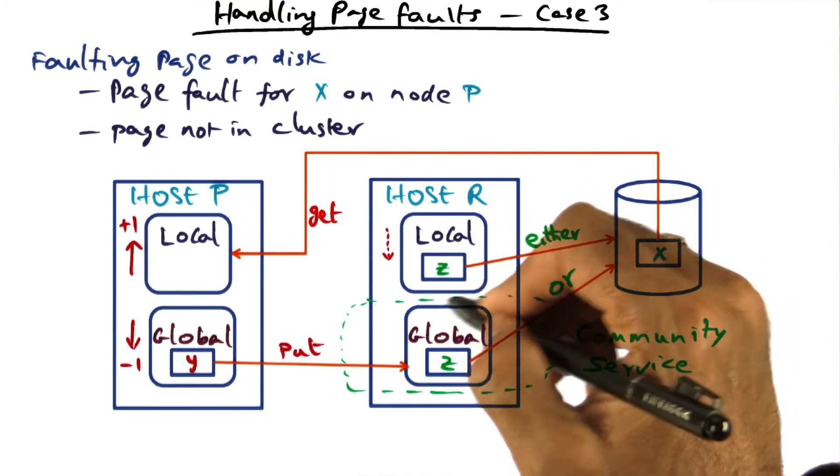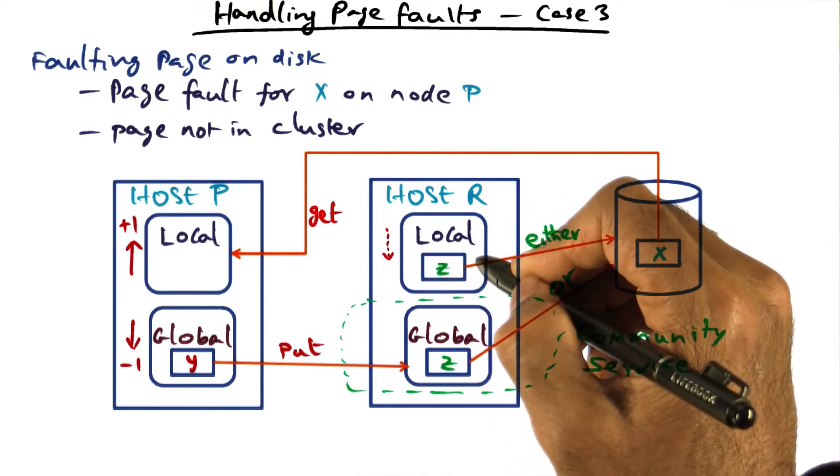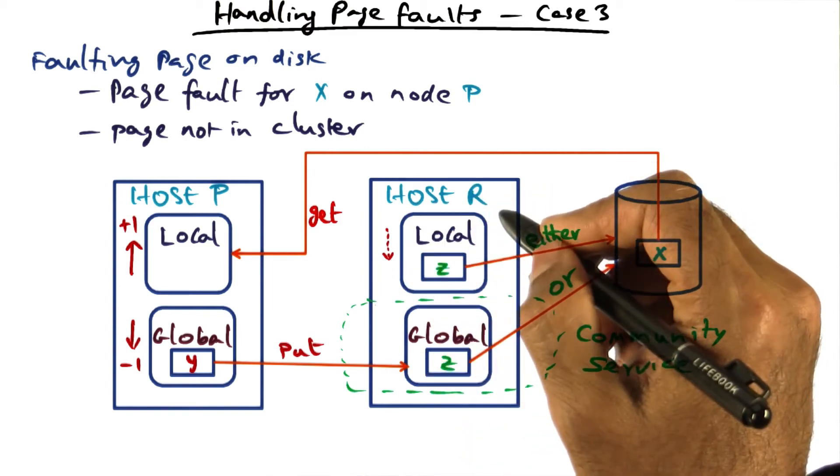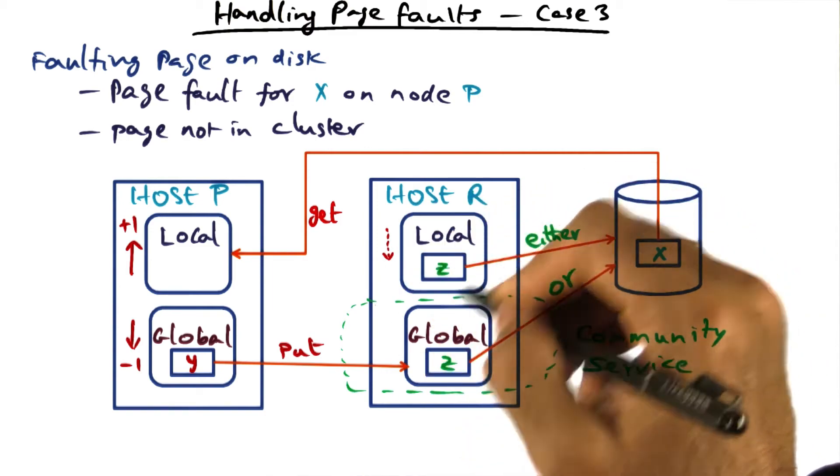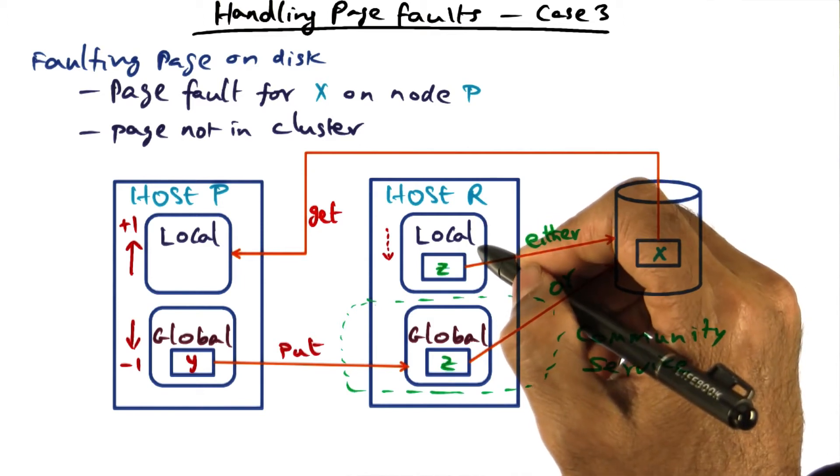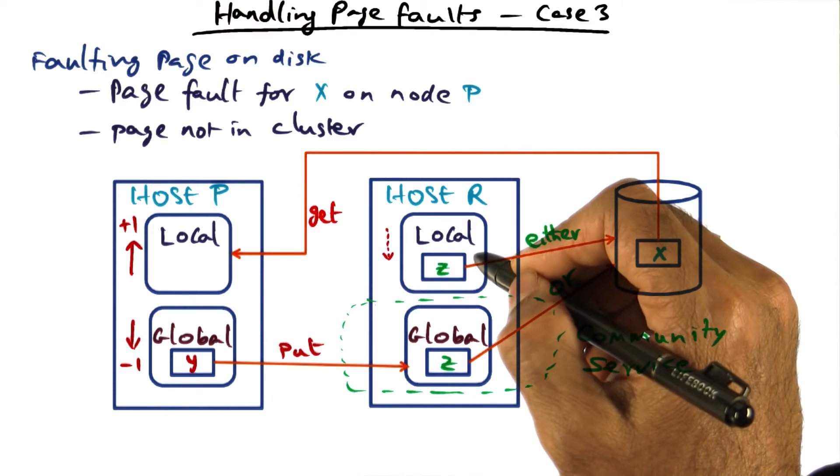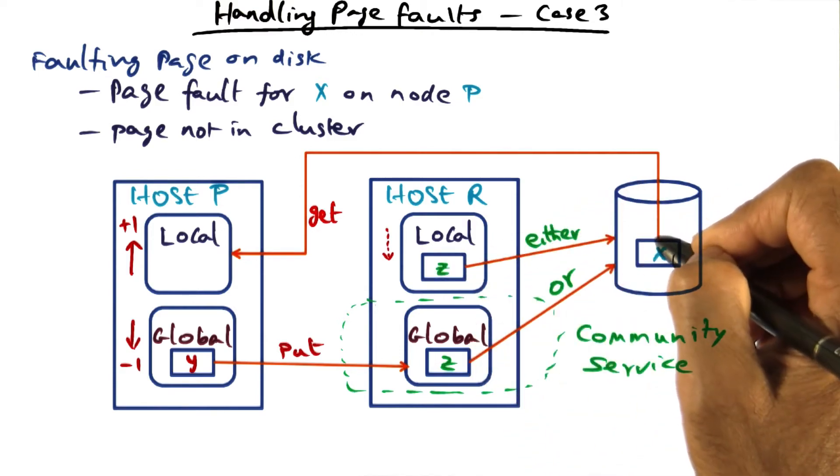On the other hand, if it is on the local part, it could be dirty. That is, if the oldest page happens to be on host R, and it also happens to be in the local part of host R, it is conceivable that this page has been modified. In which case, that modified copy has to be written out to the disk.